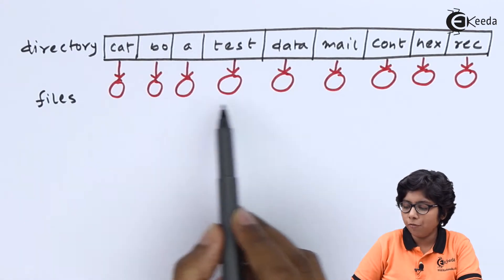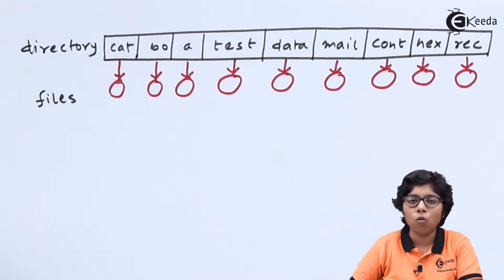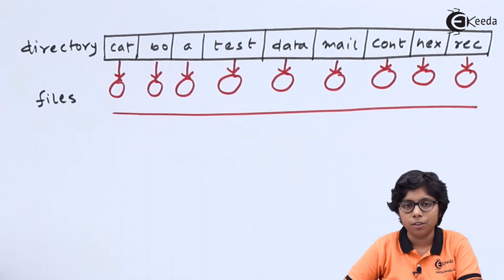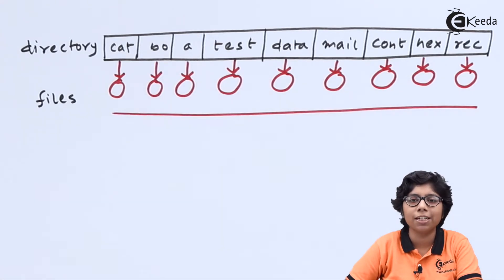Where a single user is accessing hundreds of files within one computer system, and another hundreds of files within another computer system, keeping track of this huge number of files under a single-level directory is a daunting task. In a single-level directory scheme, all files related to a particular directory are stored inside that directory only, and no similar files can be stored in different directories.